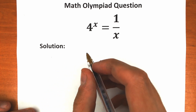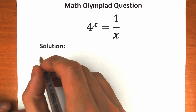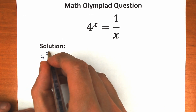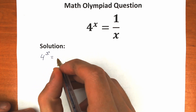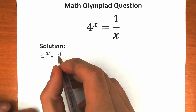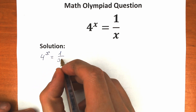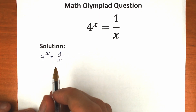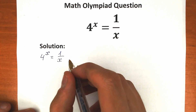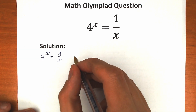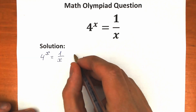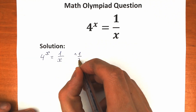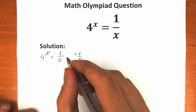First of all, let's rewrite this question right here. So we have 4 to the power x equal to 1 over x. What are we going to do next? Take a look closely — really interesting trick. Let's raise both sides to the power 1 over x.